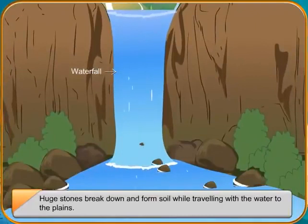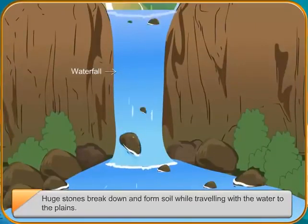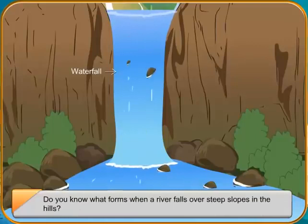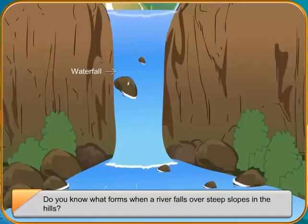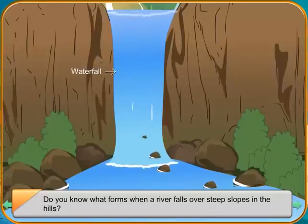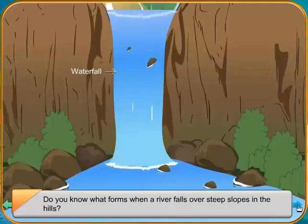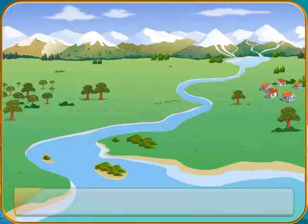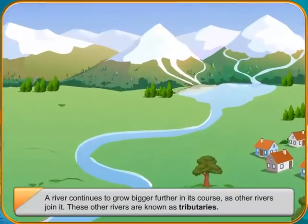A river continues to grow bigger further in its course as other rivers join in. These other rivers are known as tributaries. Some tributaries join the river in the hills while some join it later when the river reaches the plains.